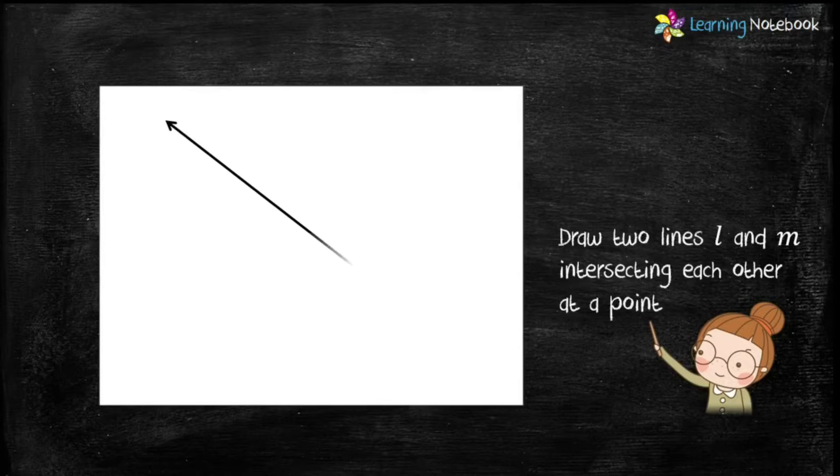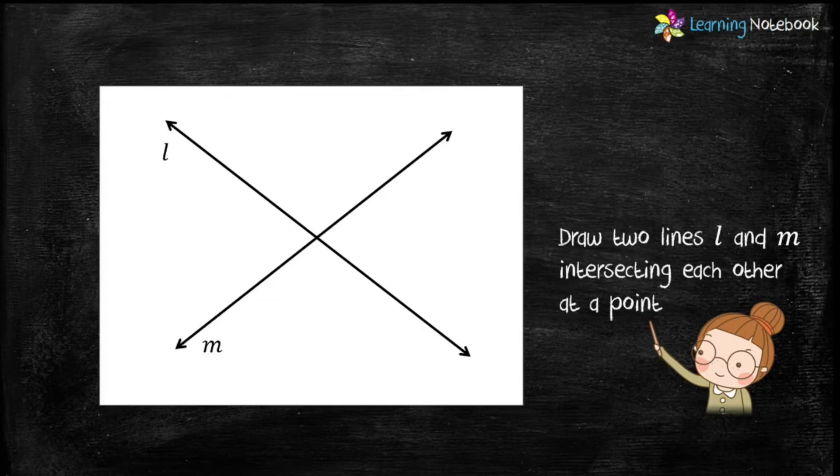So let's start the activity. Take the A4 white thick sheet and draw two lines L and M on it which intersect each other at a point.